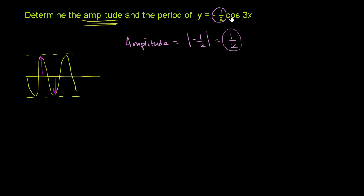If normally the amplitude — if you didn't have any coefficient here, if the coefficient was positive or negative 1 — the amplitude would just be 1. Now you're multiplying it by this amount, so the amplitude is 1 half. Now let's think about the period.